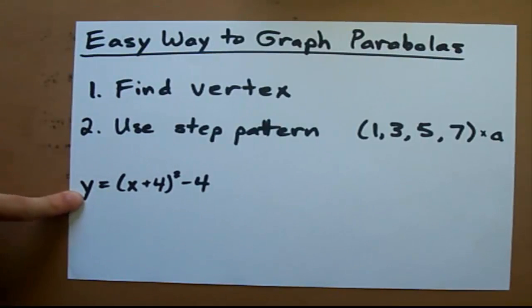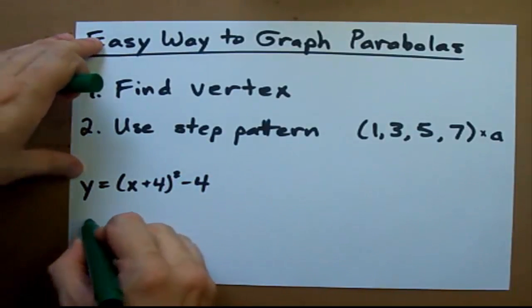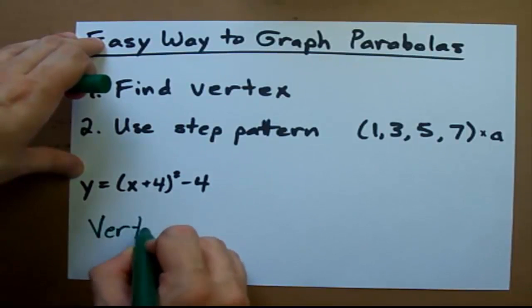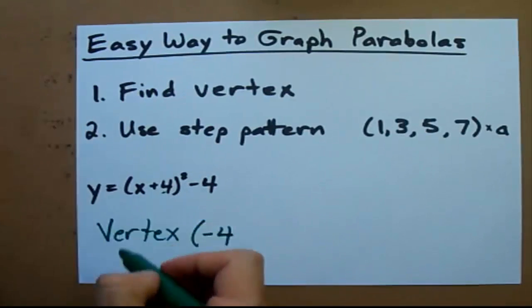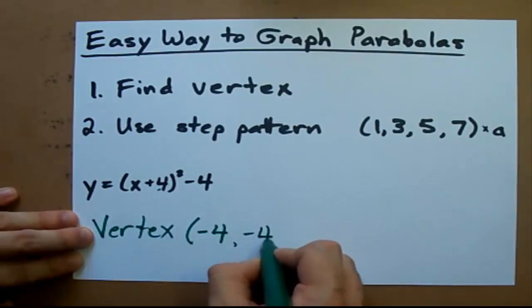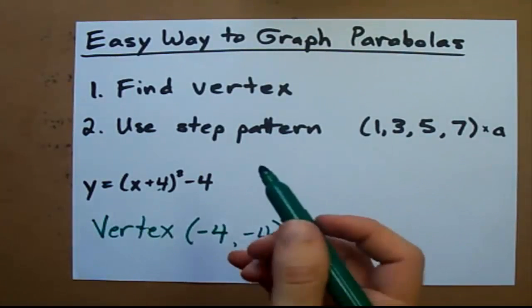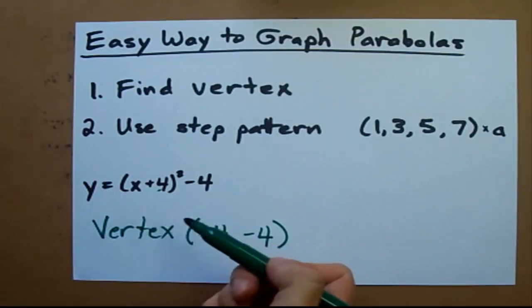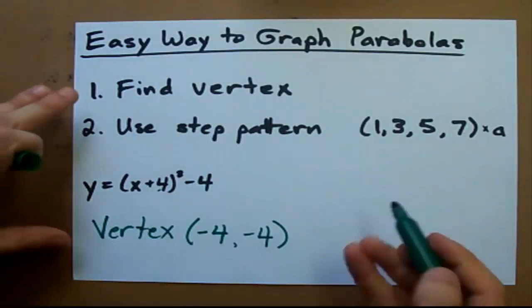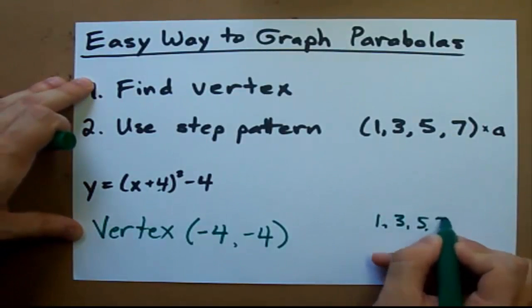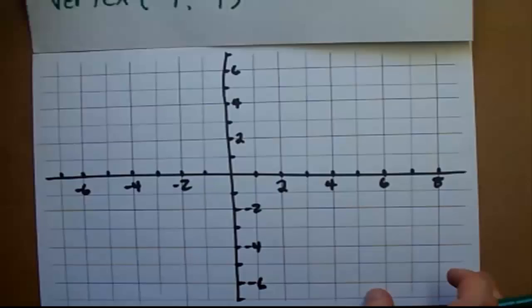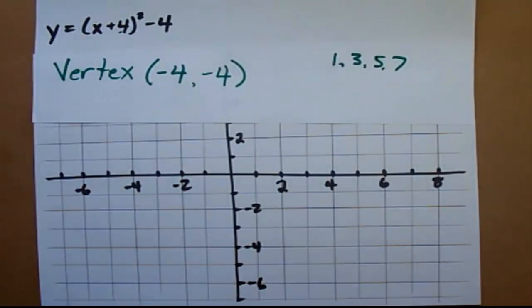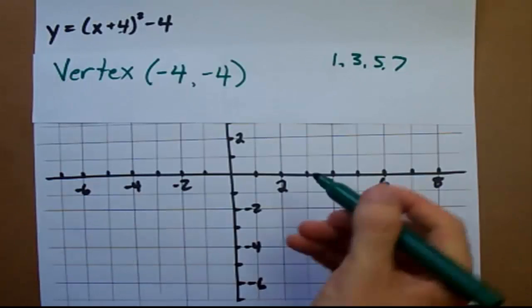If you're asked to graph this, you need to find the vertex, and we can read the vertex directly off of this because it's in vertex form. The vertex of this turns out to be at negative 4 because we flip the sign in here, and negative 4. The number out in front is just 1, so it's 1, 3, 5, 7 for the step pattern. If you take a look at my graph paper here, the vertex is at negative 4, negative 4. Let me put a point there.